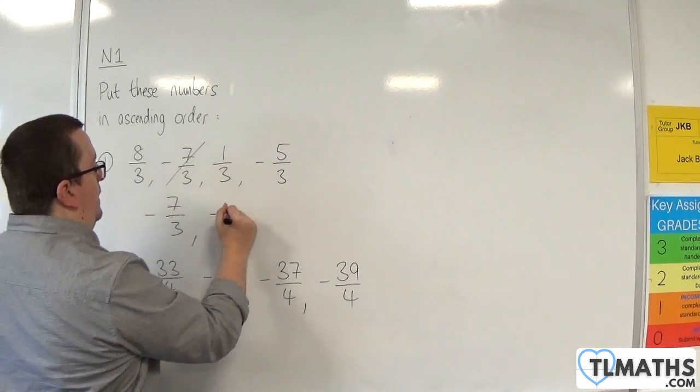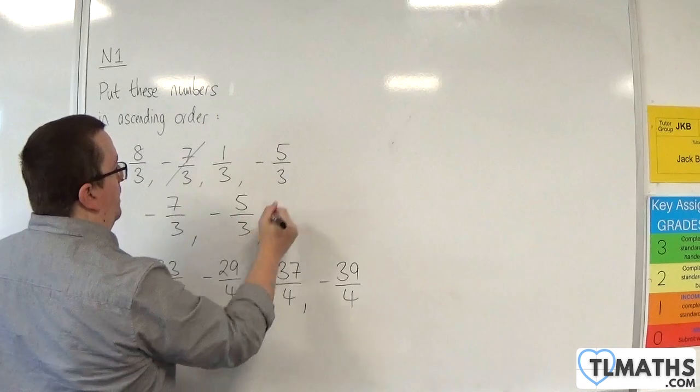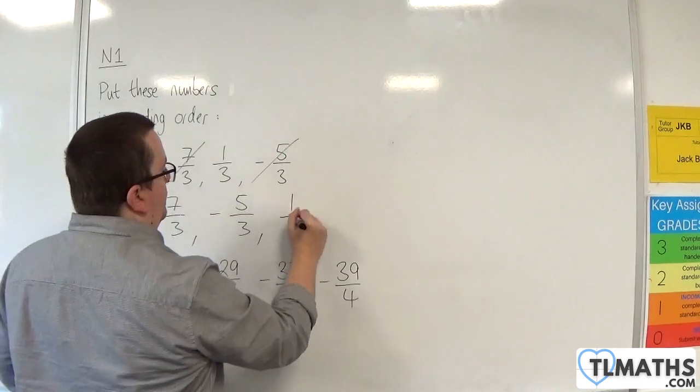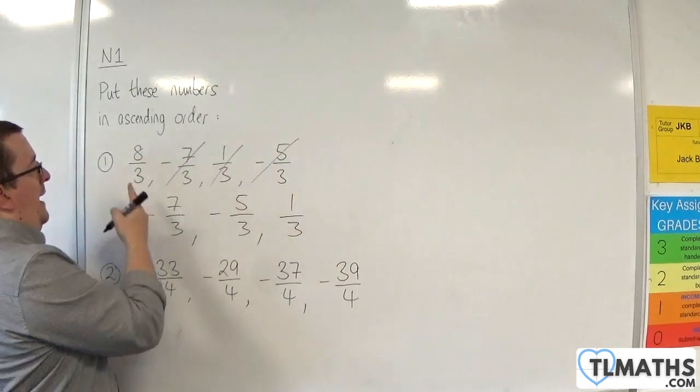Then it would be the minus 5 thirds. Then the next smallest is 1 third. And then 8 thirds.